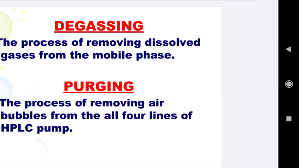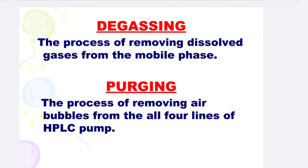Next is Degassing. Degassing is the process of removing dissolved gases from the mobile phase. Next is Purging. Purging is the process of removing air bubbles from all four lines of the HPLC pump.